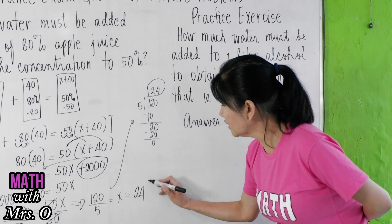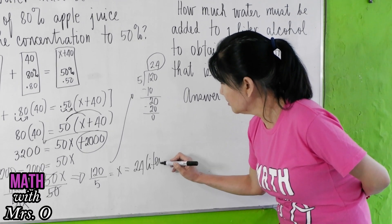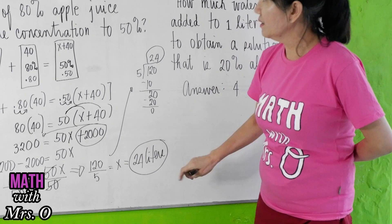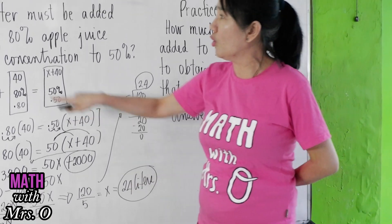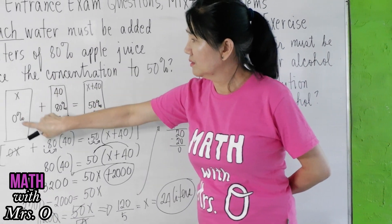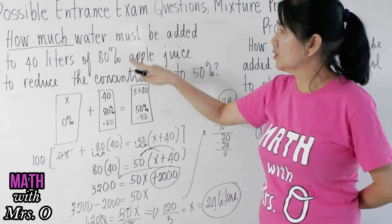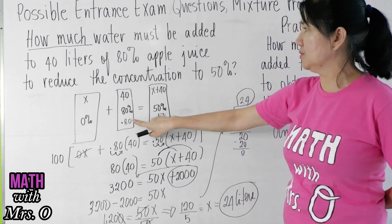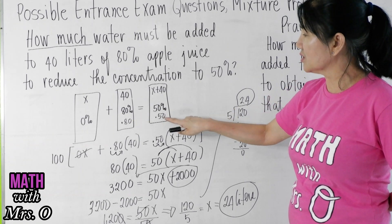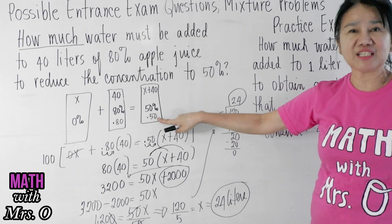So x is equal to 24 liters. Meaning, 24 liters of water must be added to 40 liters of 80% apple juice to reduce the concentration to 50%.